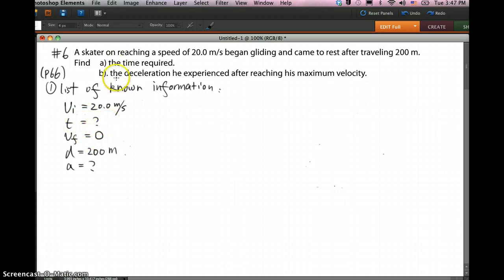Time and acceleration are unknown. You can tell from here we know three pieces of information - that's enough to solve the problem. We need to find out the other two: time we don't know and acceleration we don't know. That's step one, we list all the information we know.